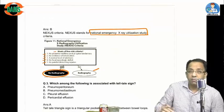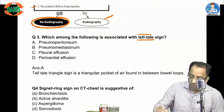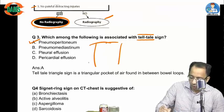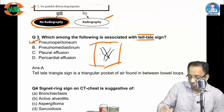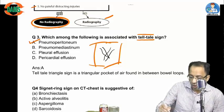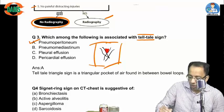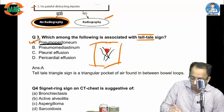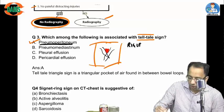A previous exam MCQ asks which condition is associated with the telltale triangle sign. This sign is seen in pneumoperitoneum. Imagine three bowel loops in the abdomen — free air trapped between them forms a triangular pocket, which is called the telltale triangle sign. Other signs of pneumoperitoneum include Rigler's sign and football sign.